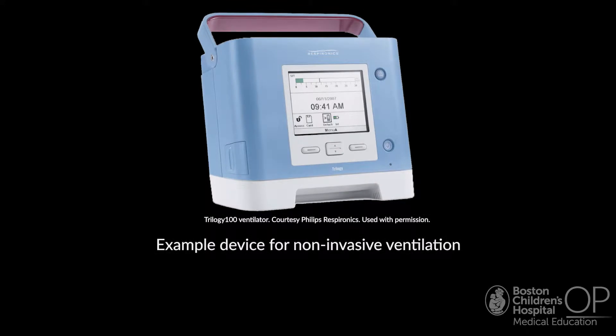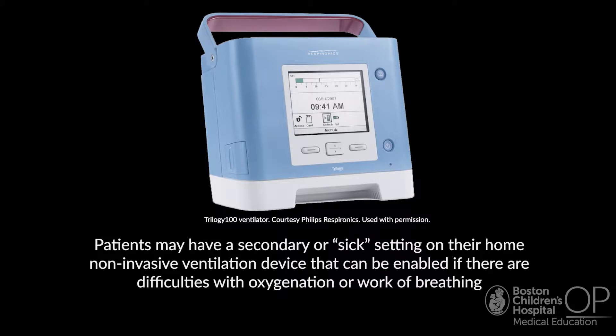If you are on a home visit, look at the settings on the device itself. Patients may have a secondary or sick setting on their home non-invasive ventilation device that can be enabled if there are difficulties with oxygenation or work of breathing. Ask families about these settings at a home visit, or if you are called about changes in their child's respiratory status.